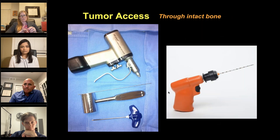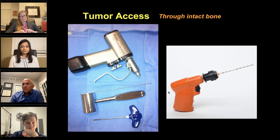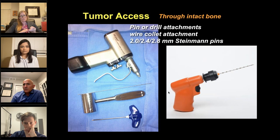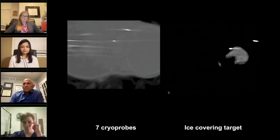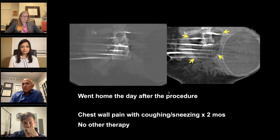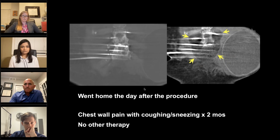You have to find ways to gain access — there are multiple different systems from drills to battery-based systems, including Stryker drills and bone biopsy access systems used in various ways. Seven cryoprobes were placed into the sternum using this approach, and you can see the ice generated around the sternum — pretty aggressive, but you have to get a margin when treating these patients. This patient went home the next day with chest wall pain and was sneezing for two months, but required no other therapy, and had no recurrence after treatment.